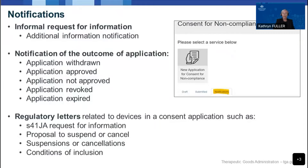Now that we've had a refresher on the reasons for applying for consent and how to apply, I'd like to talk briefly about the types of notifications related to consent applications. The new release of the Consent for Non-compliance dashboard delivers functionality which gives sponsors the ability to view and respond to a range of notifications, making the dashboard a one-stop shop for your consent application throughout its lifecycle. Notifications may include an informal request for additional information regarding a submitted application - for example, if the delegate requires more information to make an informed decision, they may send an additional information notification asking for clarification or additional documentation. This is different to a Section 41JA request for information, as it is an informal request to assist the delegate with assessment.